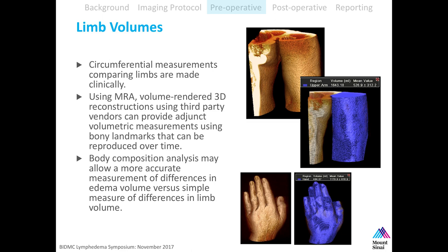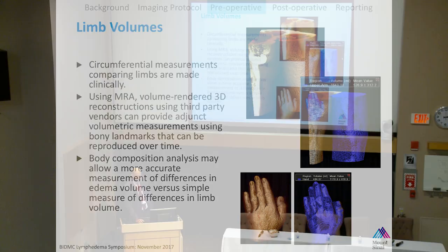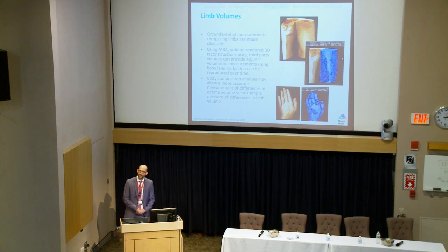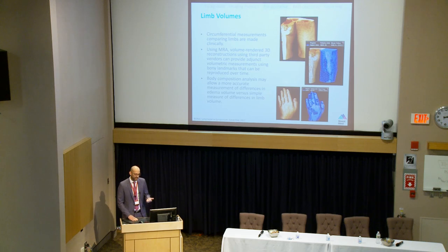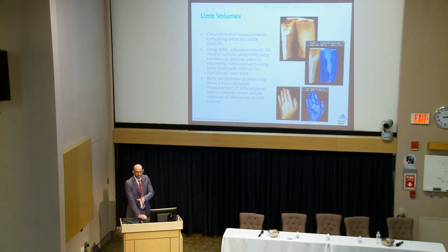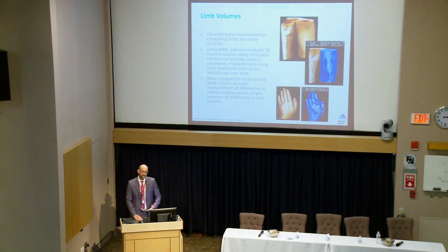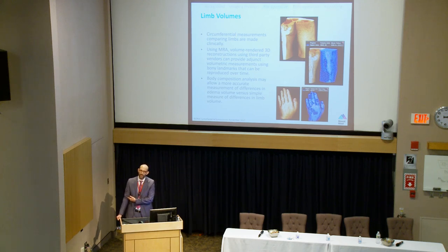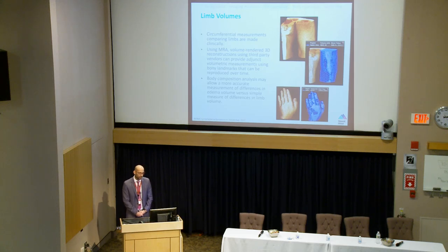One of my residents had a great idea of selecting all the background noise and then selecting the extremity — within 60 seconds you can have a volume calculation. The caveat for the upper extremity is that you're imaging sections at a time, so you can only measure volumes based on sections. But we can use techniques like measuring 15 centimeters from an elbow joint north and south, and that can be reproducible over time for comparison.